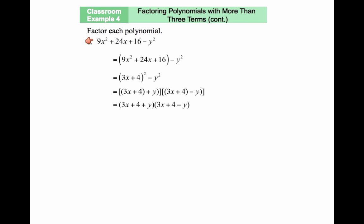Let's take a look at another example. Here we have four terms, but grouping the first two and the last two won't give the right grouping. Even grouping the first with the third or first with the last doesn't work. However, one term here is a perfect square — y squared — with a minus sign in front. So if the first three terms form a perfect square, then we're looking at a difference of squares. Let's check if 9x squared plus 24x plus 16 is a perfect square.